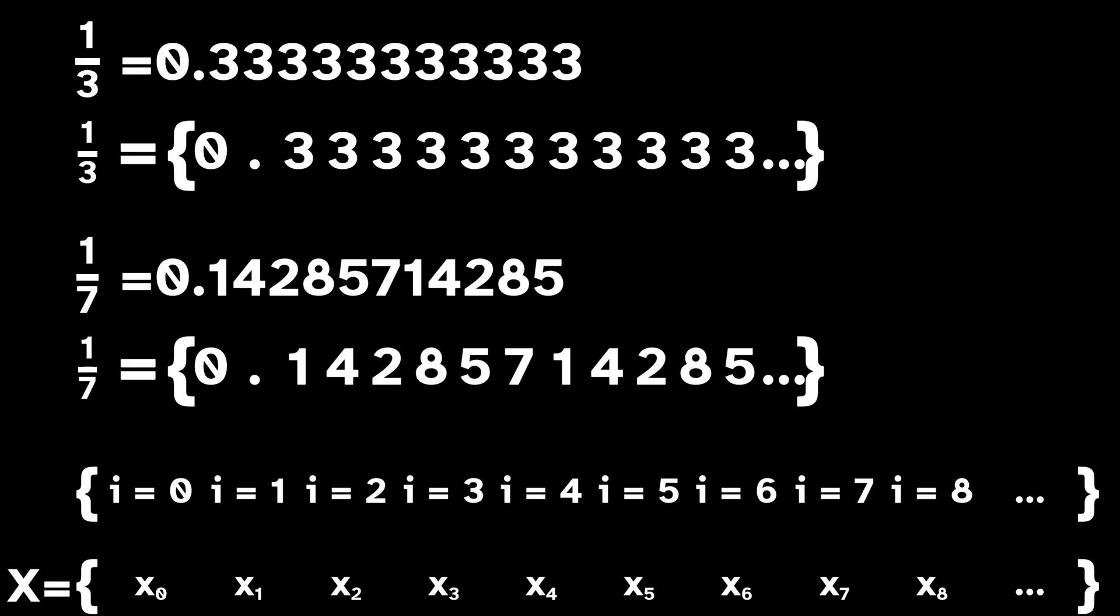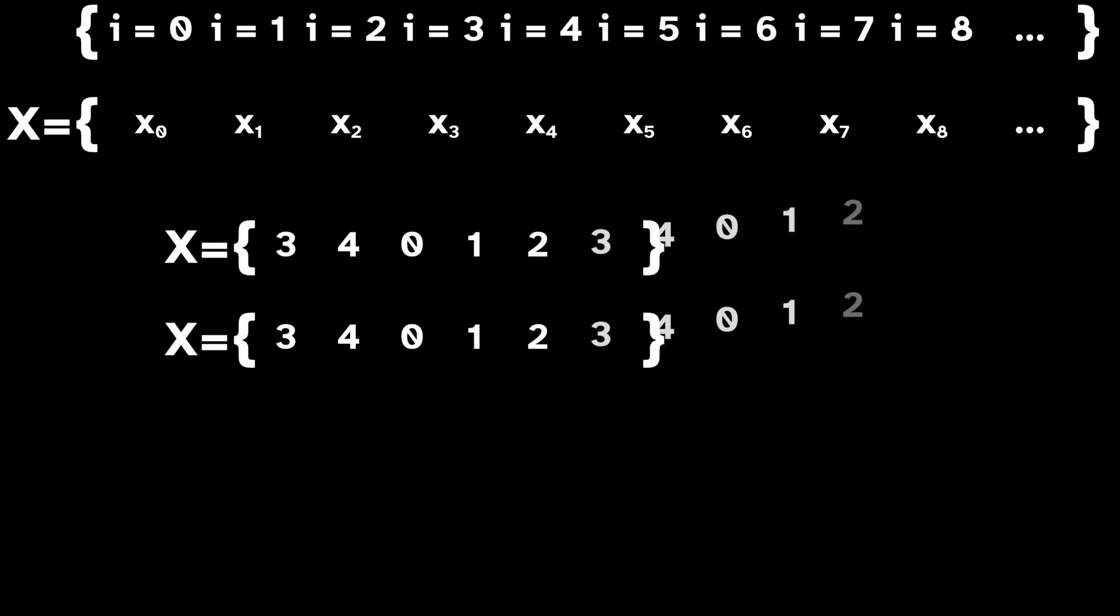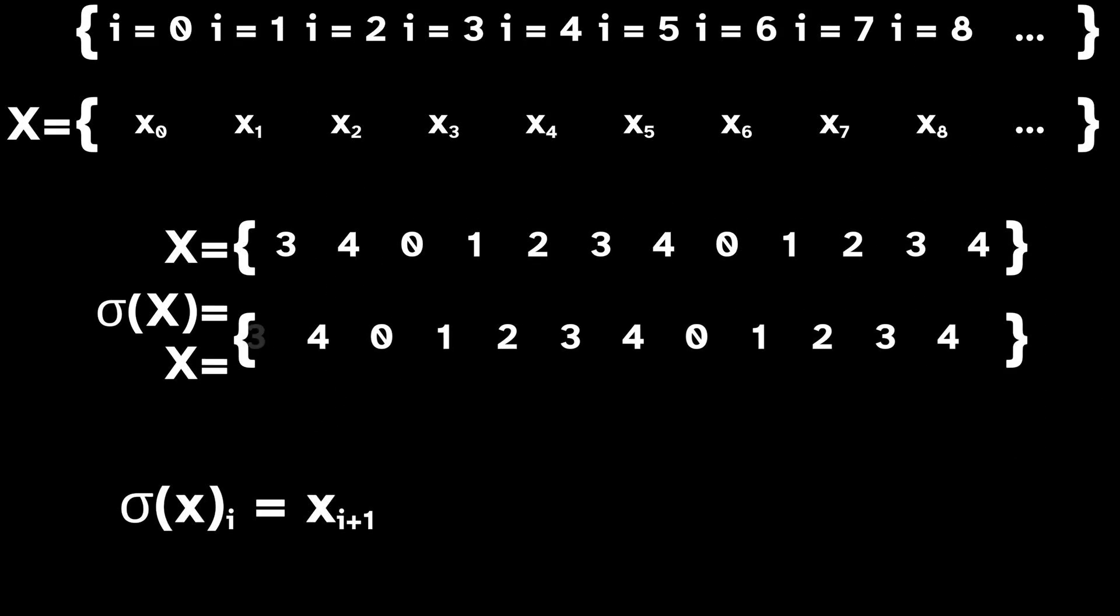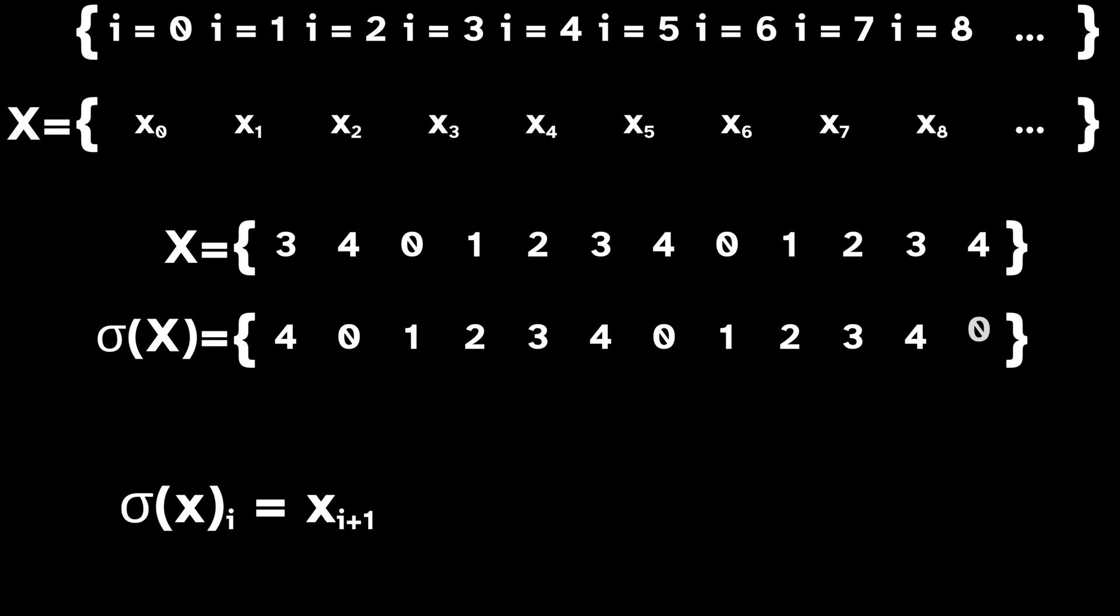Now that we have a space full of points, the other component of a dynamical system is a function sigma which takes the sequence of symbols x and outputs a new sequence which is a copy of x shifted to the left with its leftmost symbol deleted. The function sigma is called the shift map, and together with a to the n it forms a dynamical system known as the full shift.